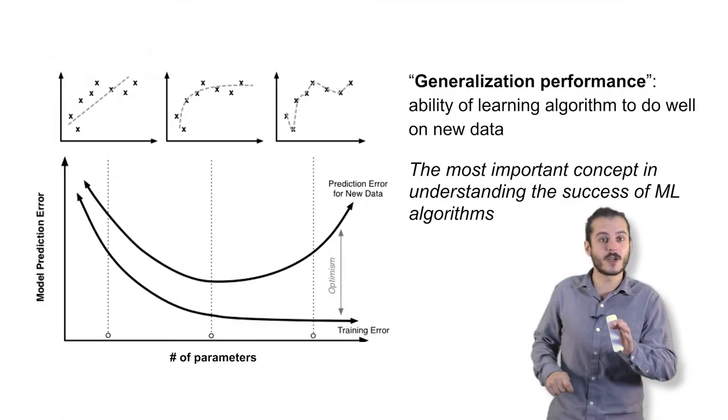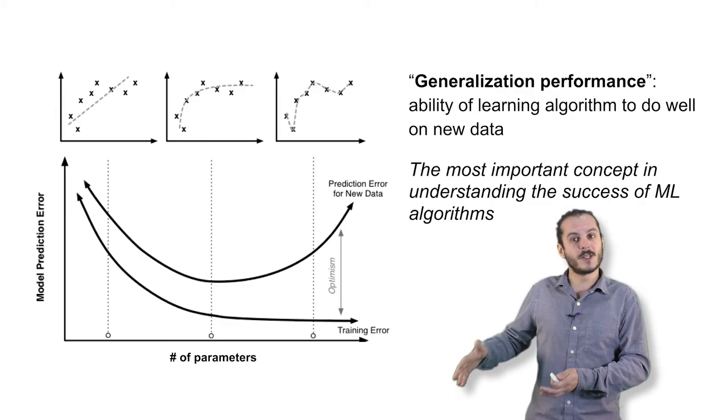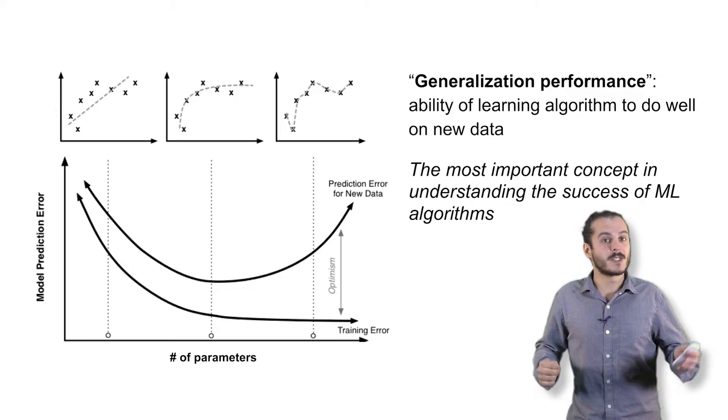You'll often see curves like these, shown in your lower left, showing how training performance decreases monotonically as we add more parameters, but testing performance has a minimum, and that is the number of parameters that's best for the situation.